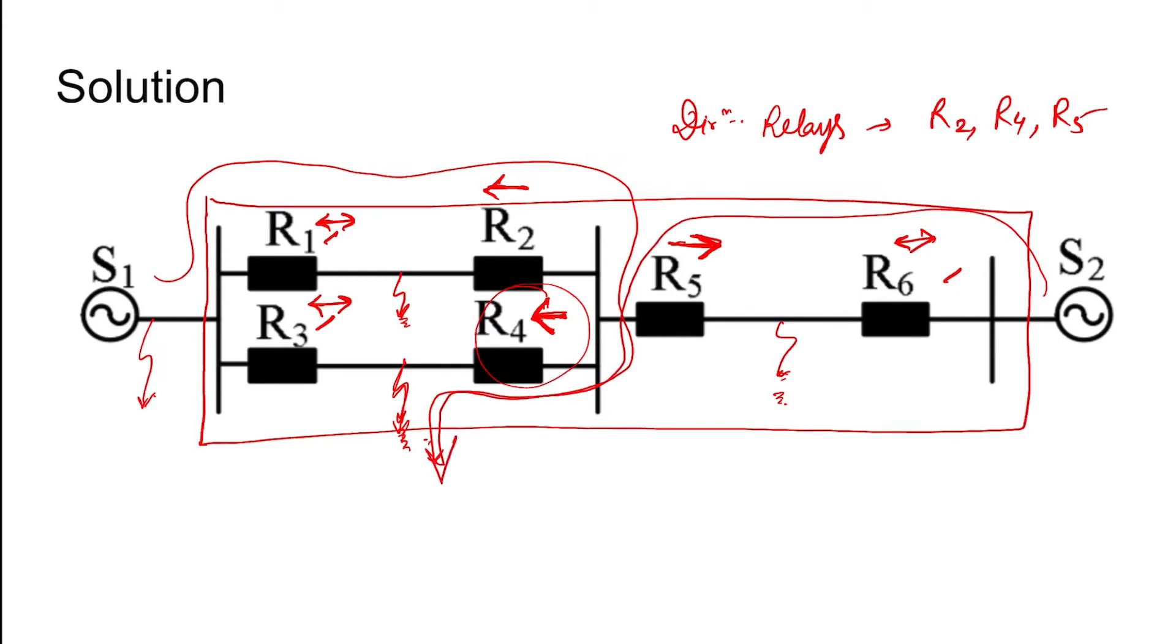The current contribution by S2 for a fault at this point, that is between R3 and R4, is in this direction, so relay 5 cannot operate. Similarly, relay 2 also cannot operate for a fault between R3 and R4 because the current is in this direction during that condition. But R2 is a directional relay.